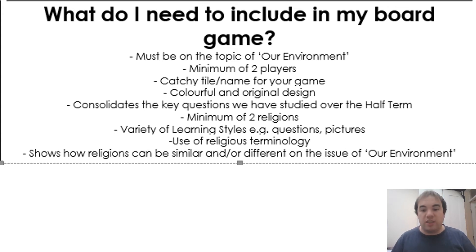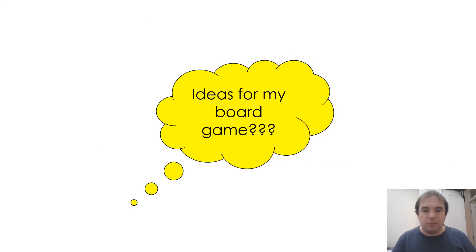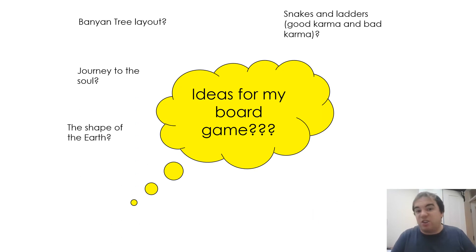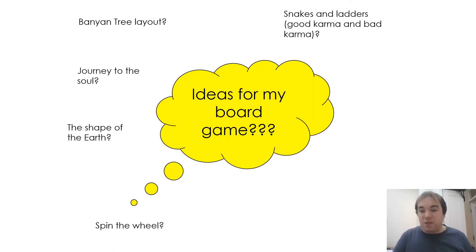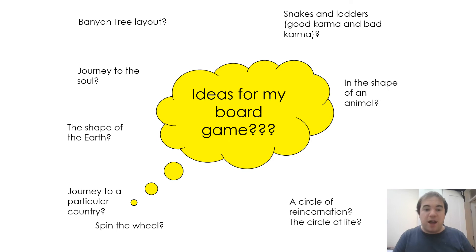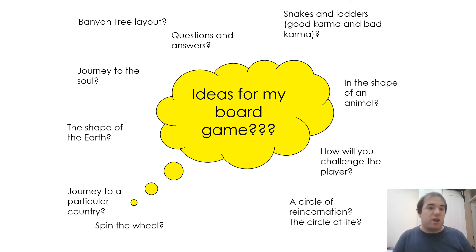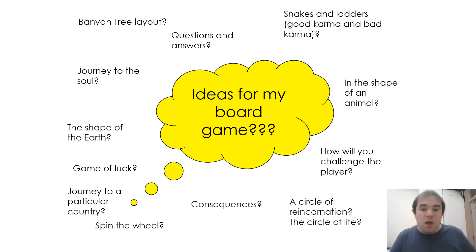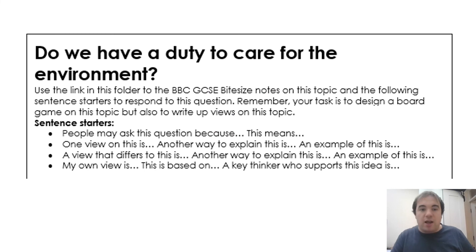Think about if you can refer to those key terms — benevolent, omnipresent, omnipotent, etc. — and try to show how religions can be similar or different on the issue of our environment. For those struggling for inspiration on how your board game should look, some ideas might include: snakes and ladders related to good karma and bad karma, a journey of the soul, a banyan tree layout, the shape of the earth, spin the wheel, a circle of reincarnation or the circle of life, the shape of an animal, a journey to a particular country, questions and answers like trivial pursuit. Think about how you'll challenge the player — game of luck or skill — and what consequences there are for each move.